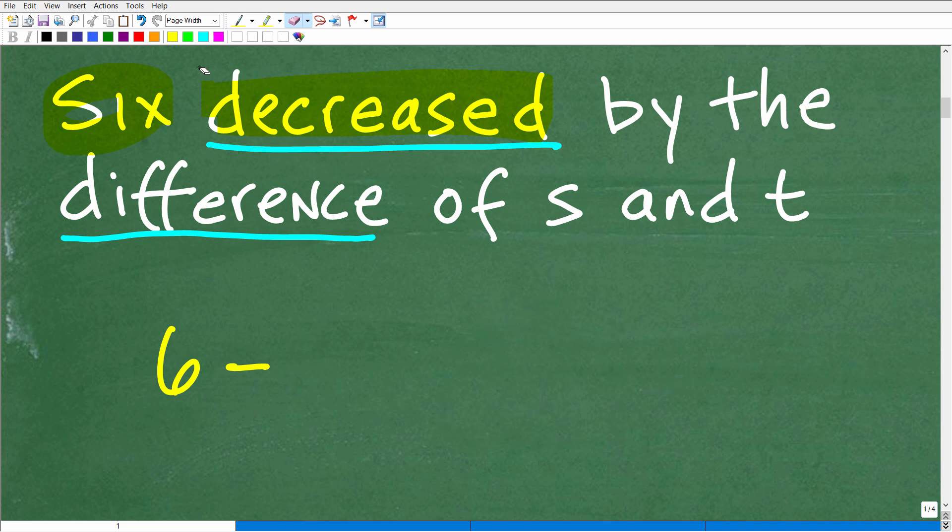Now, let's go ahead and talk about the difference. Okay, now, this is a typical place where students get confused. So the difference of S and T, that's a very specific thing. It's S minus T. Okay, S minus T is the difference of S and T.